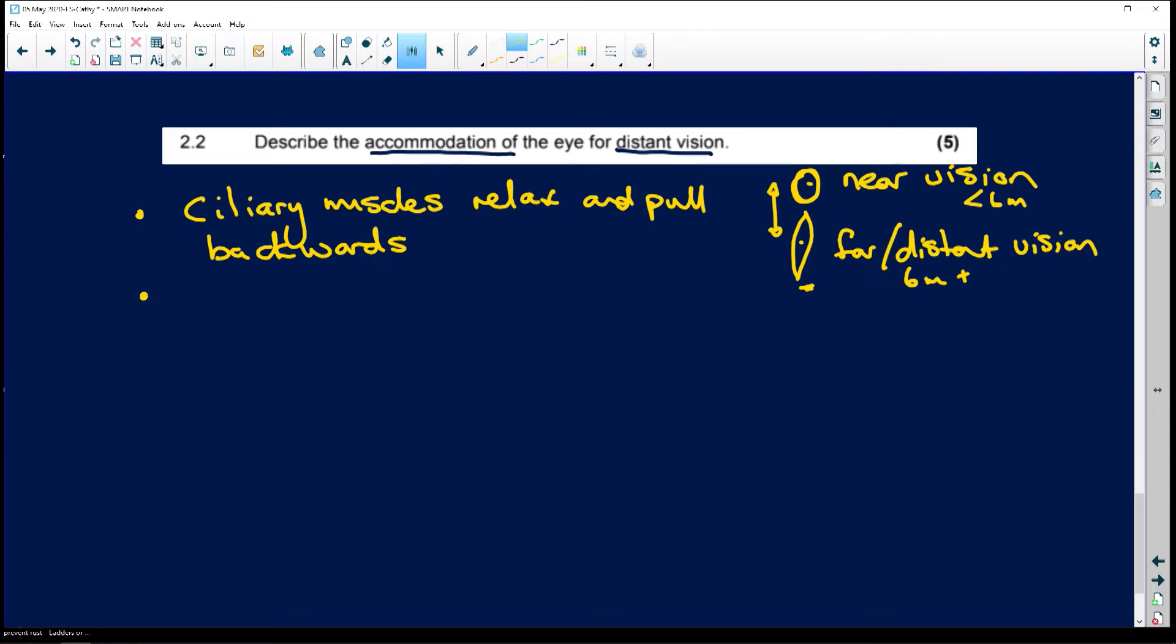When they do that, your suspensory ligaments - now remember ligaments don't stretch. Your suspensory ligaments that are attached here all the way round to the lens, those suspensory ligaments are going to become tight. So suspensory ligaments tighten.